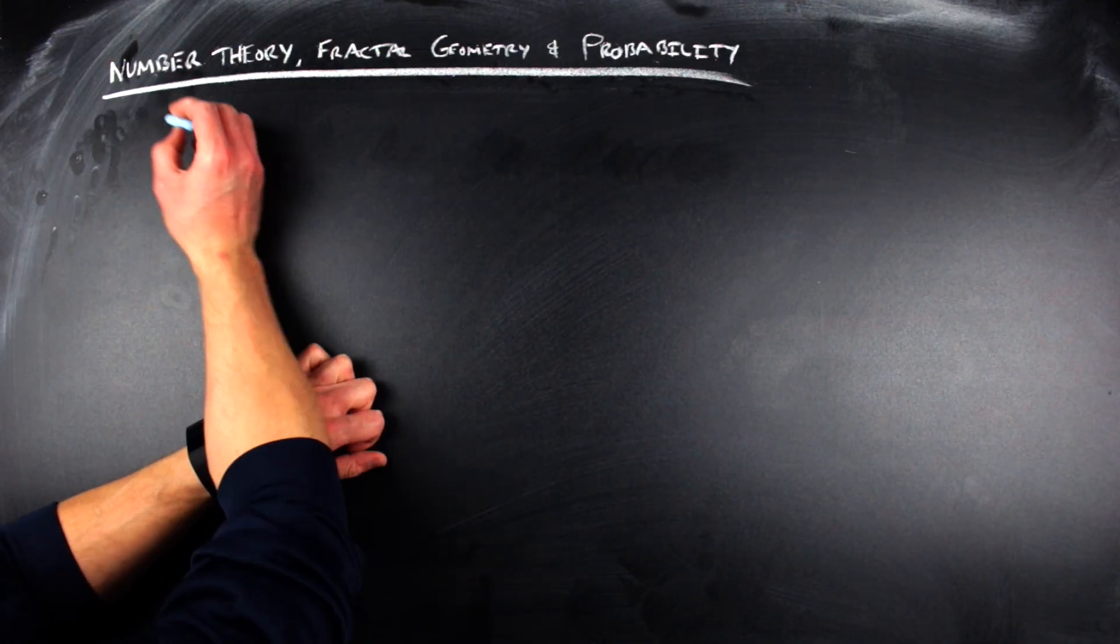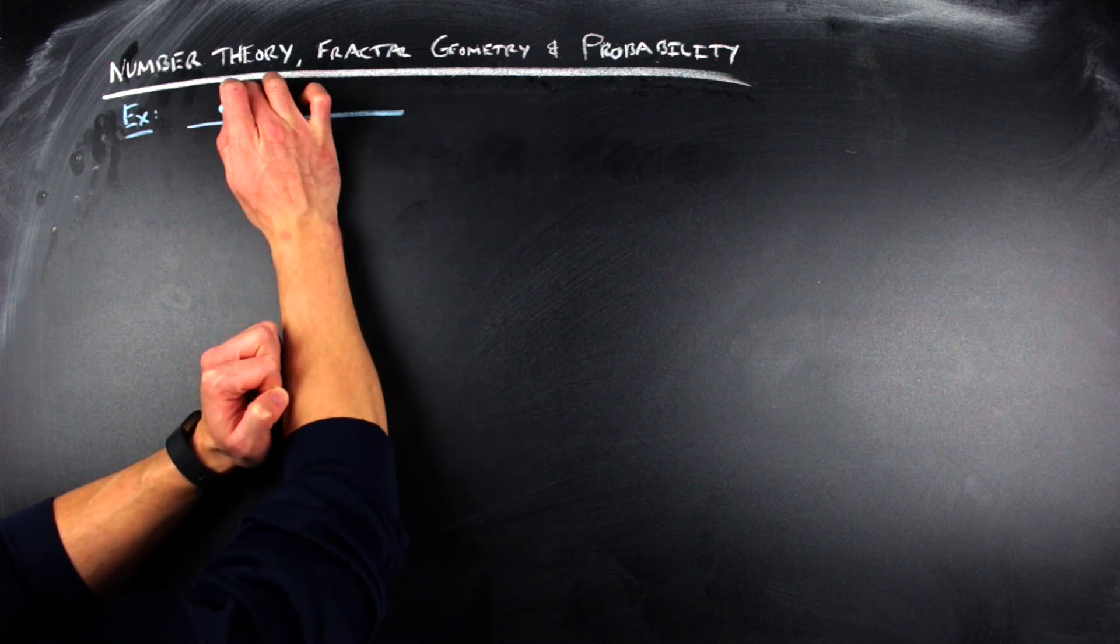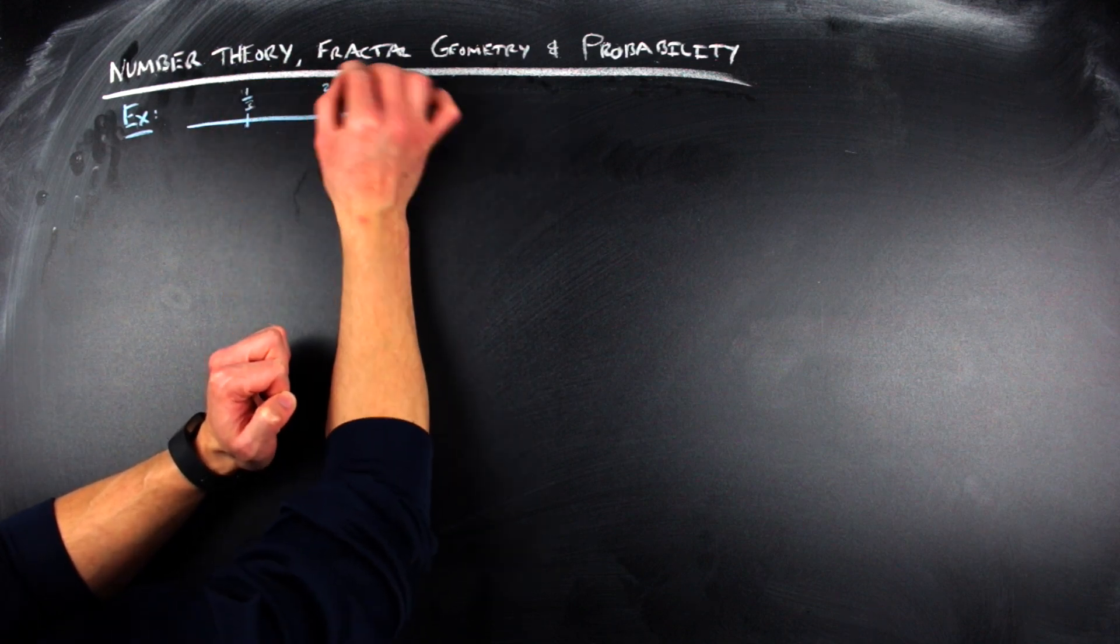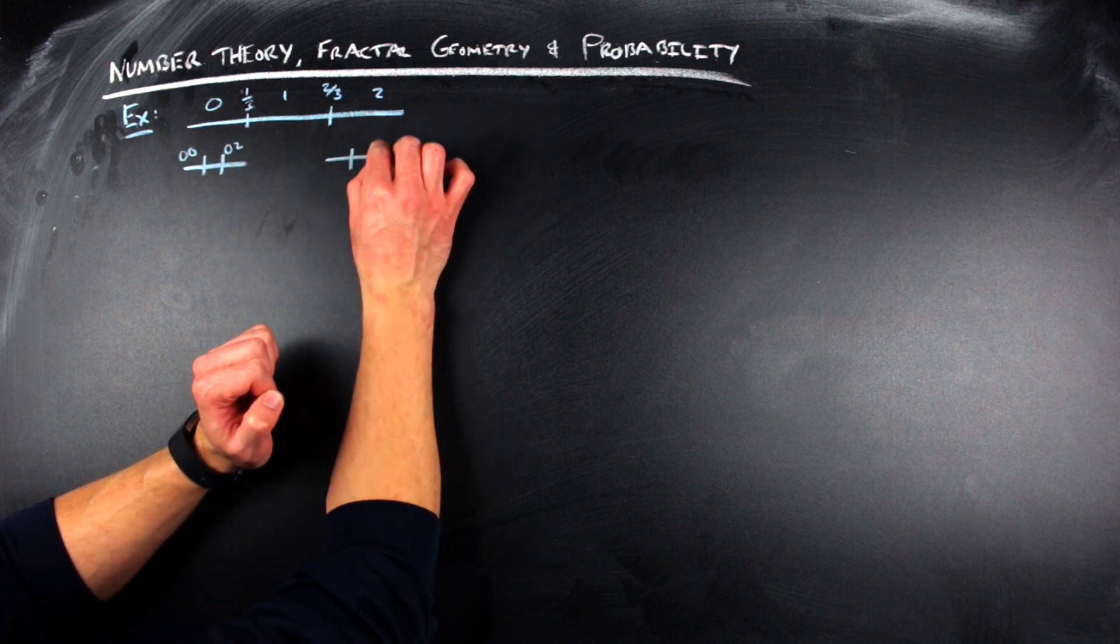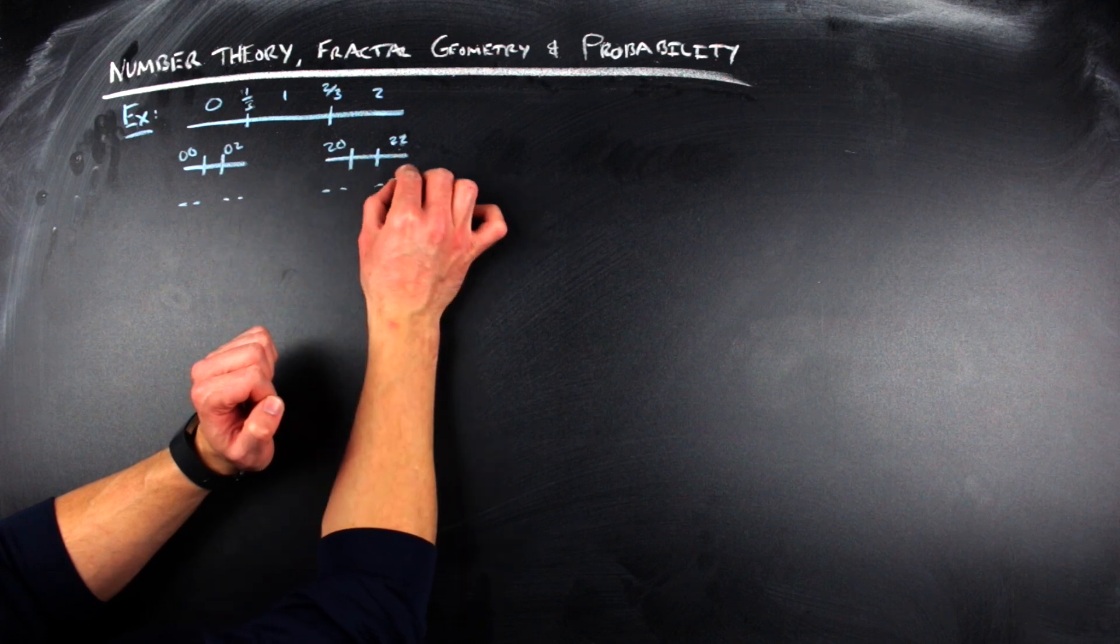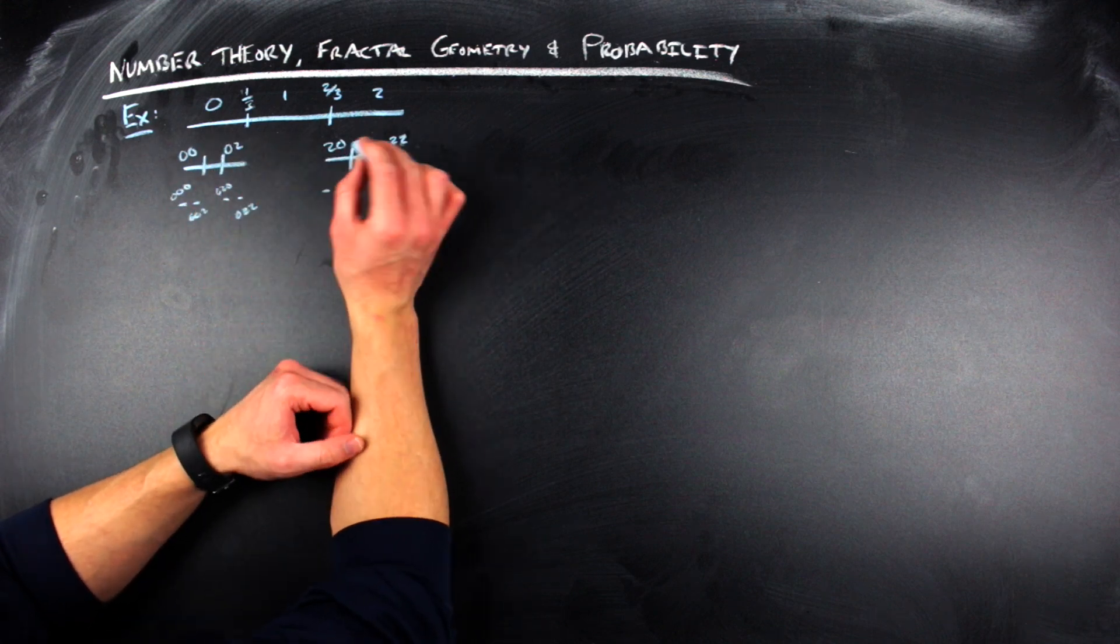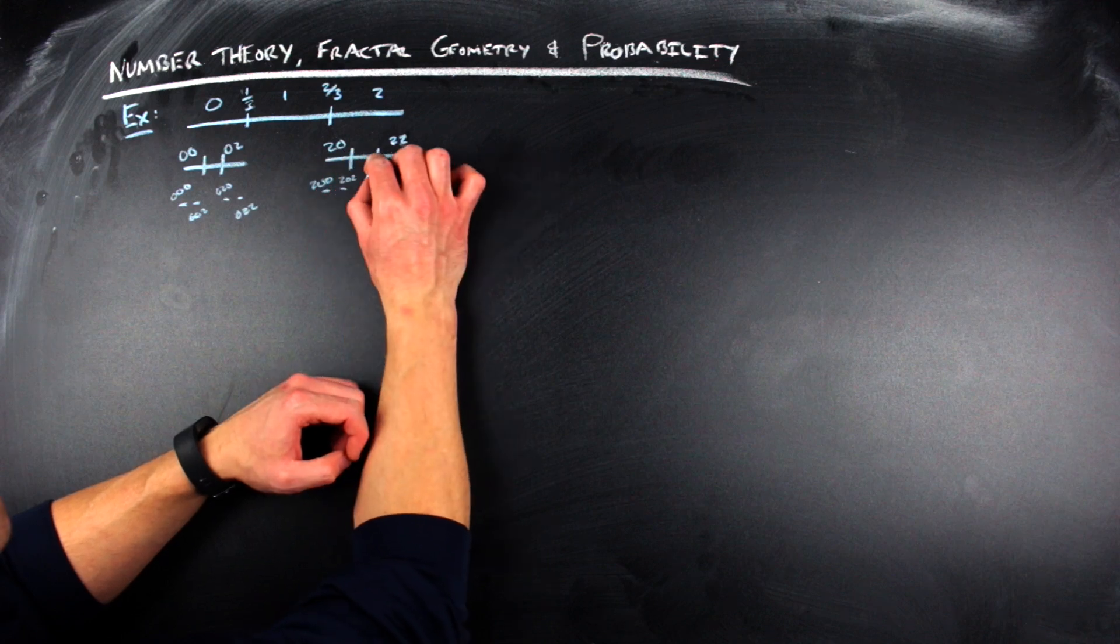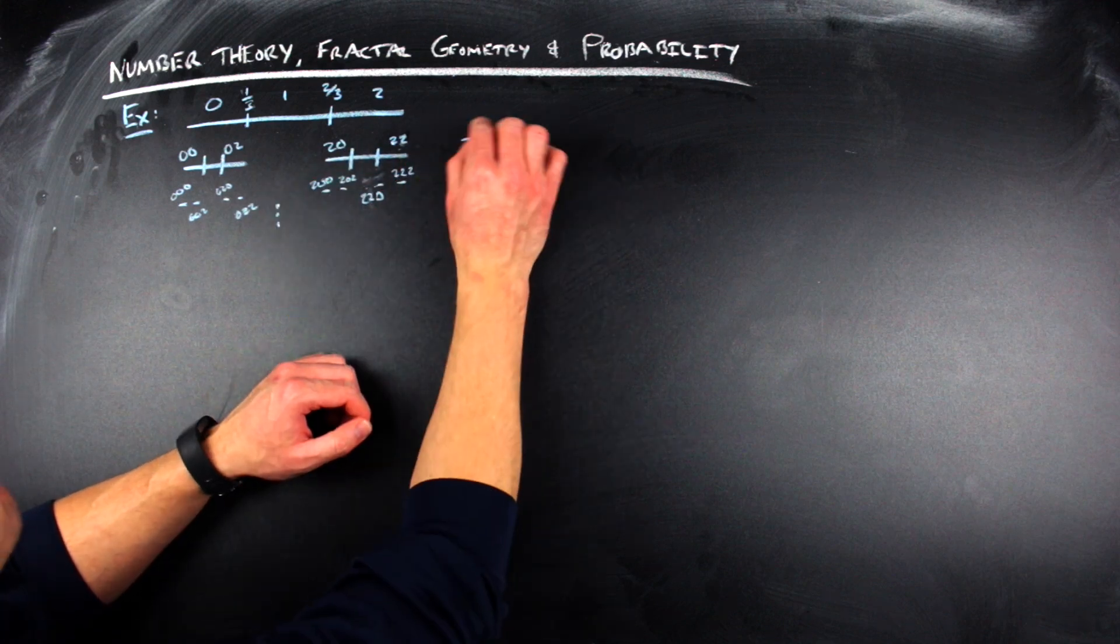You have the unit interval. From the unit interval you remove the open middle third, throw it away, and then you have two closed thirds left over. From each of those you remove an open middle third, which is an interval of length one-ninth, and you throw those away. Then you do it with intervals of length one twenty-seventh and you keep going down and do this construction forever.